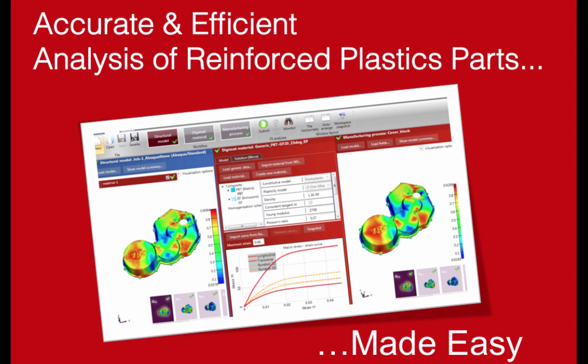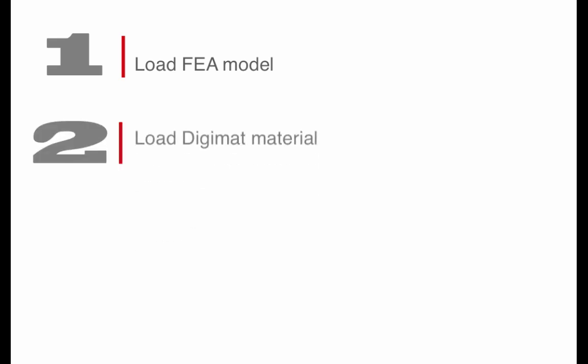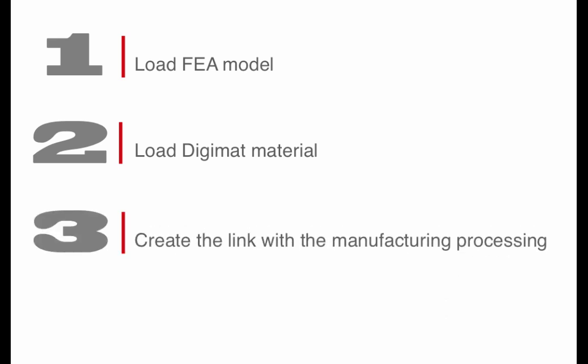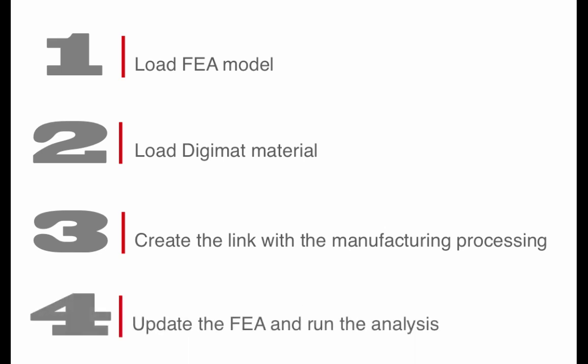Digimat RP is an integrative solution, and the analysis can be set up in four easy steps. Step 1 is importing the finite element analysis model from your preferred FEA tool. Step 2 is assigning the anisotropic material to the part. Step 3 is transferring the fiber orientations from the injection mesh to the structural mesh. And Step 4 is running and post-processing the finite element analysis.